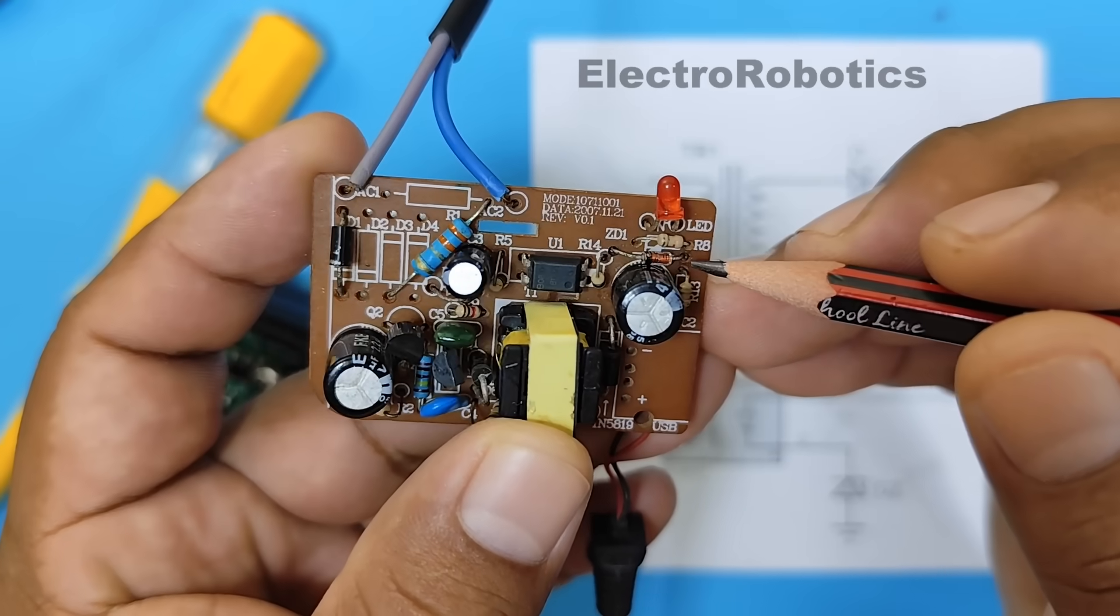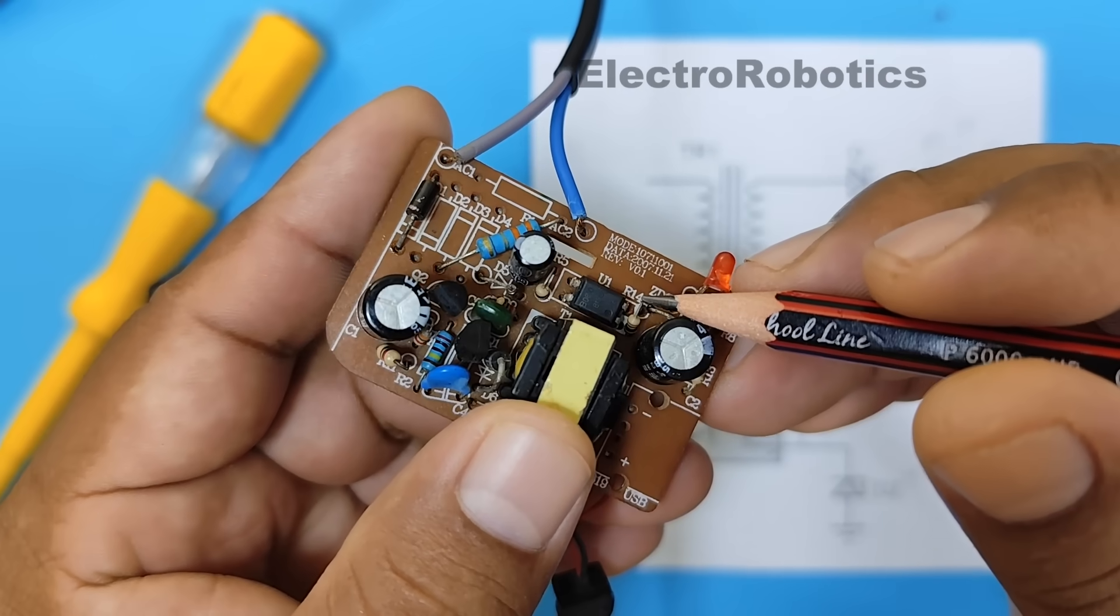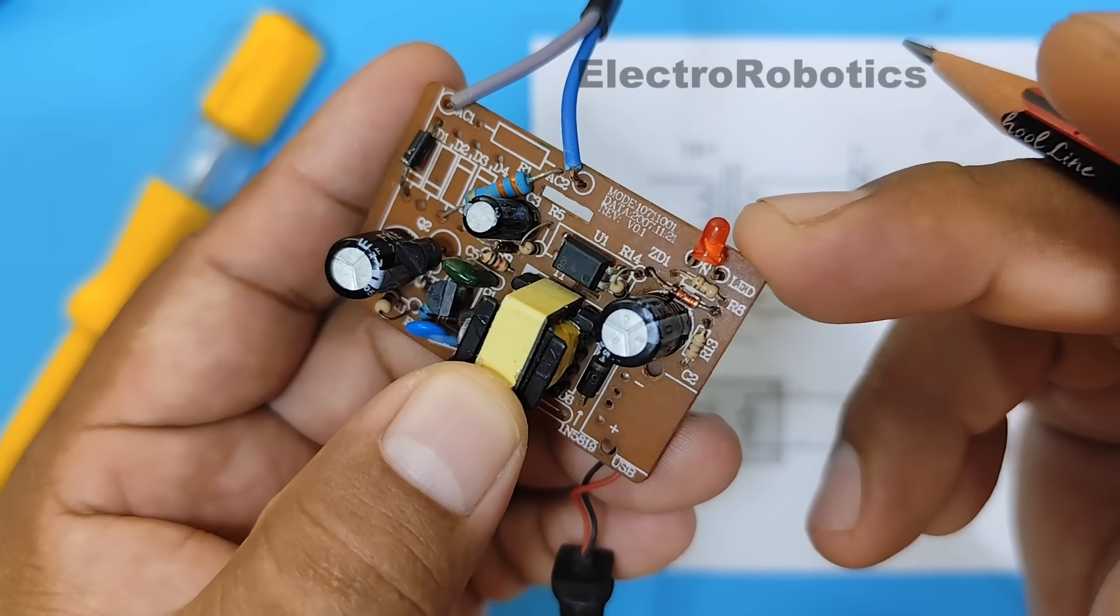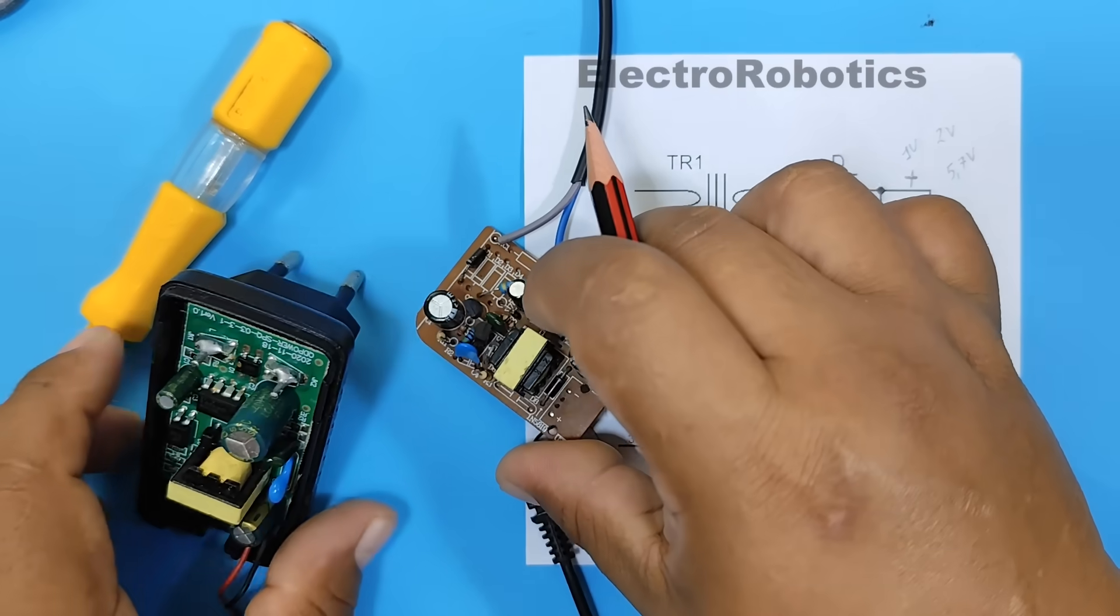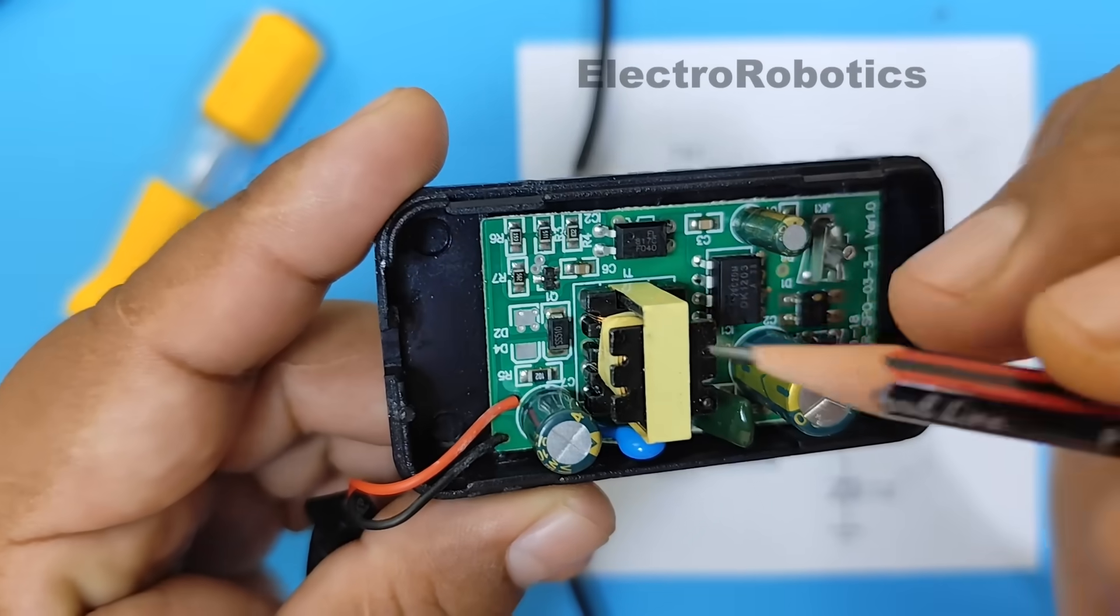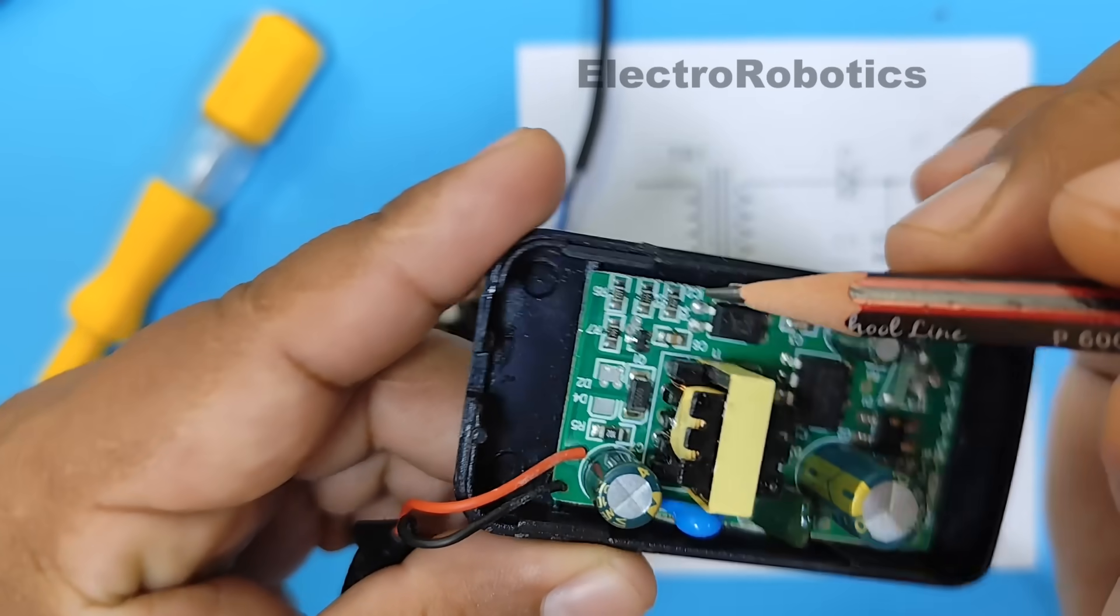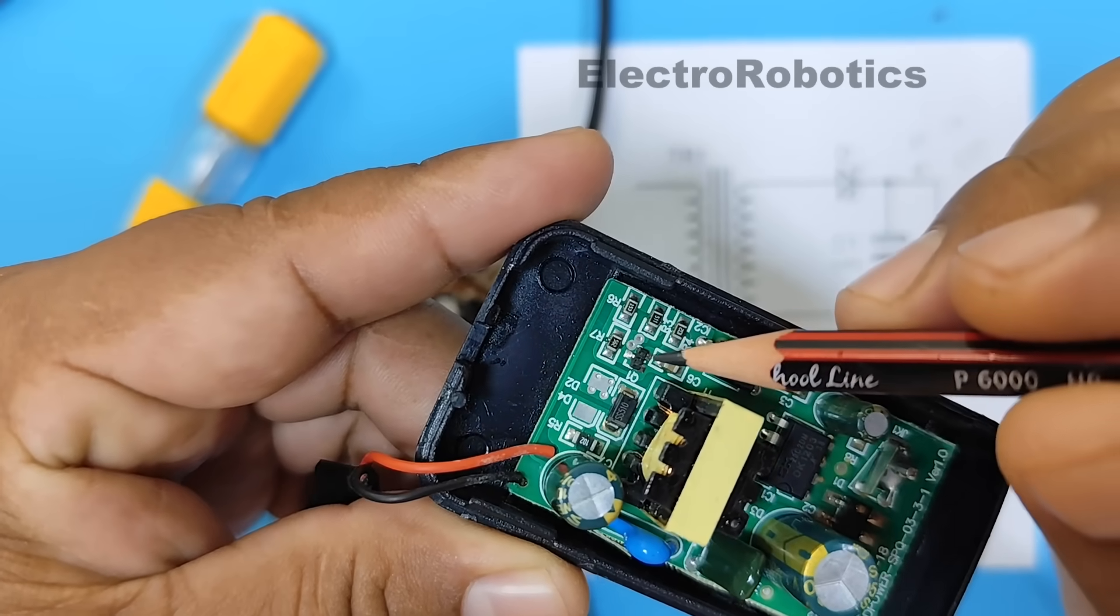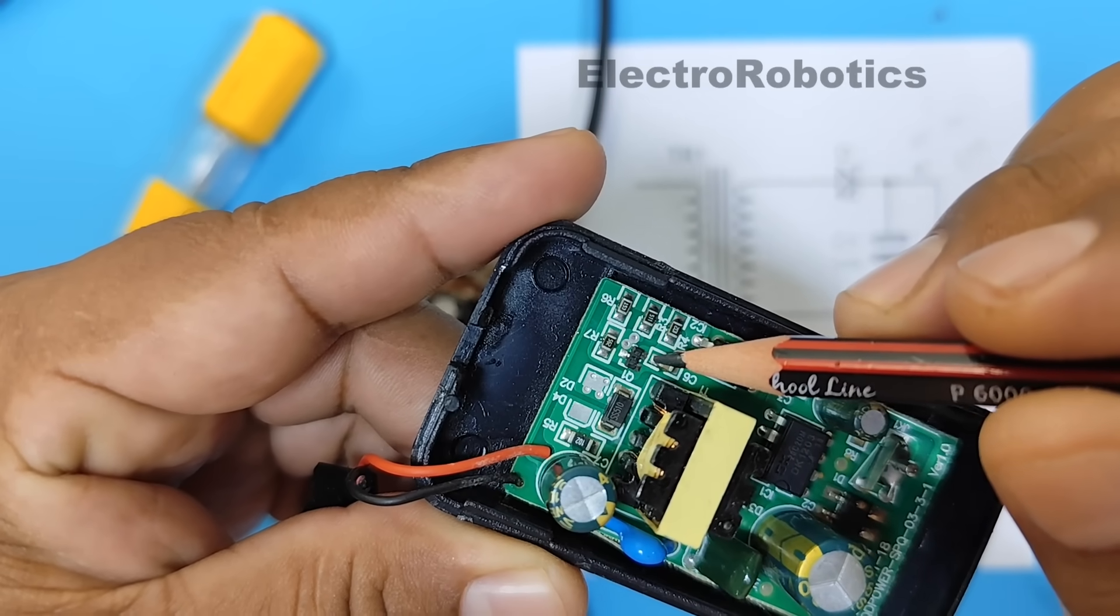Here you can see the Zener diode and the optocoupler and the resistor that accompanies it. We also have this type of electronic board where you will also see the optocoupler. Here we have a programmable Zener diode, the TL431.